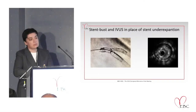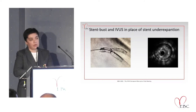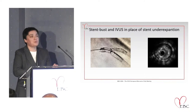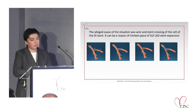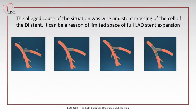IVUS was performed in this area and revealed two stent layers at the region of the diagonal branch. At this point we decided to stop and find a good solution for the patient. In this picture you can see what caused the situation: the wire and stent crossing through the protruded diagonal stent, limiting the space for full LAD stent expansion.